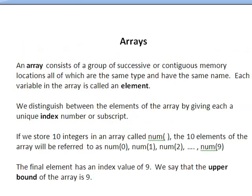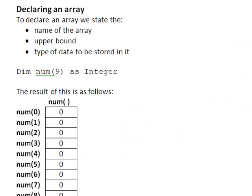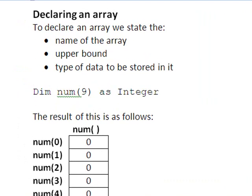Now let's look at how to declare an array. As we have seen in earlier examples, to declare a variable we state the name of the variable and the type of data to be stored in it. We do the same for an array, but we also specify the upper bound. So to declare the array num to hold 10 integers, we would write dim num(9) as integer. So we have included the upper bound of 9 in the brackets after the array name.